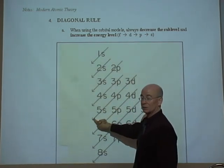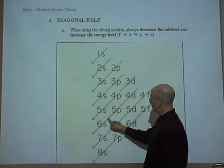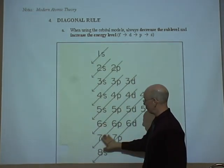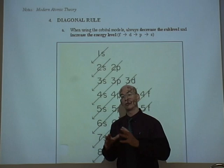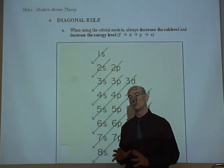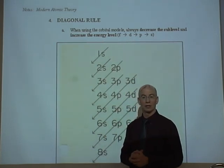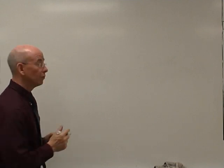3d, 4p, 5s, 4d, 5p, 6s and so forth. So this neat little diagram shows you the exact order that should be used to figure out the electron configuration. Okay, let's do that again real quickly.